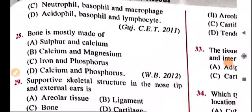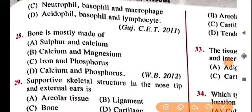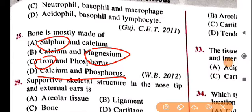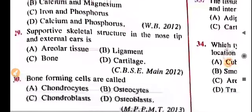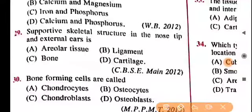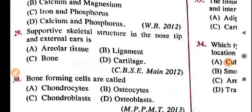Question 28: bone is mostly made of calcium and phosphate. Iron, magnesium, and sulfur are not components — so options A, B, C are wrong and option D (calcium and phosphate) is correct. Question 29: the supportive skeletal structure in the nose tip and external ears is cartilage — as previously mentioned, the nose tip and ear pinna are made of cartilage.